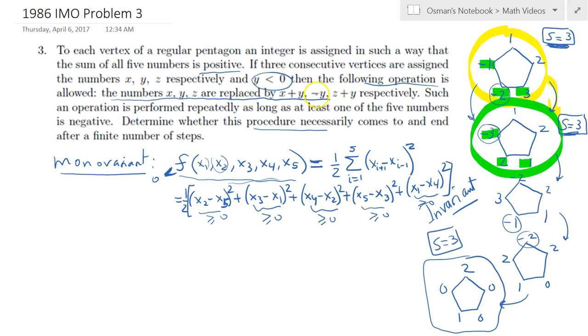Now let's just focus on the example given in the problem. Consider the following points: let's say that our operation takes the point (u, x, y, z, and w), and after a single step it takes it to the point (u, x plus y, minus y, z plus y, and then w). Let's assume that y is the guy who is less than zero.